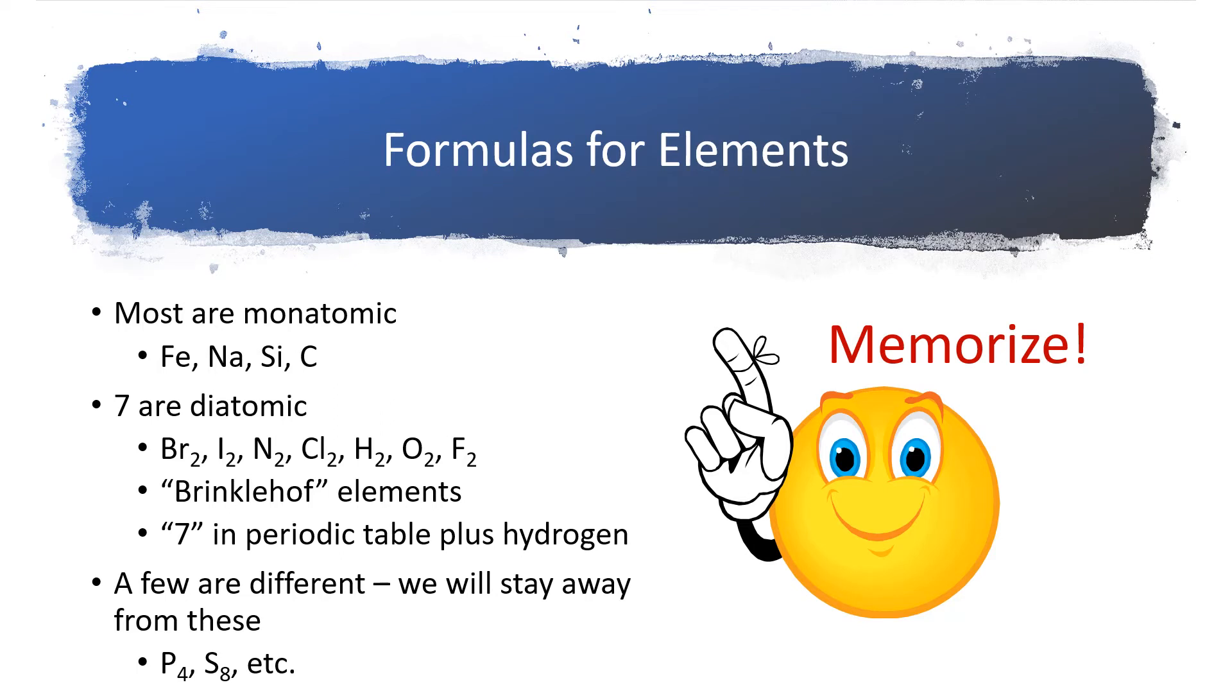Back in Chapter 4 we learned how to write the formulas for compounds ionic, molecular, and alkane, but we kind of glossed over how you write the formulas for elements, and we're going to need that for this chapter. So let's add in to our nomenclature how we write formulas for elements. Most elements are monatomic, so that means when we write the symbol for the element, we're done, right? So the example is given here for iron, sodium, silicon, and carbon. We just write C for carbon. That's it.